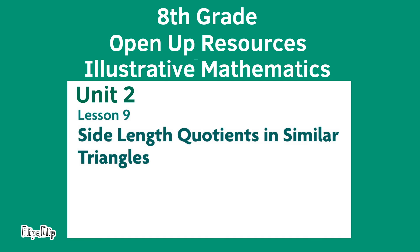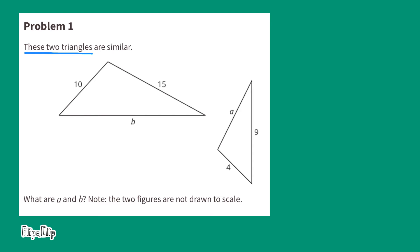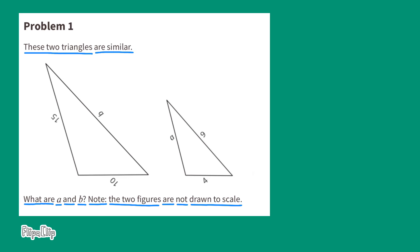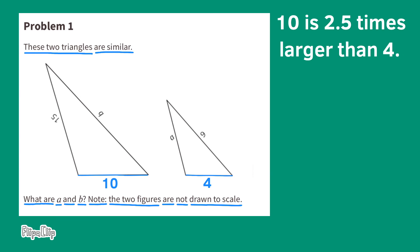Here's another look at the same lesson: 8th grade Open Up Resources Illustrative Mathematics, Unit 2, Lesson 9 — Side Length Quotients in Similar Triangles. Problem number 1: These two triangles are similar. What are A and B? Simply rearranging these triangles makes it a lot easier to find their corresponding sides. Side length 10 corresponds with side length 4, and 10 is 2 and a half times larger than 4. This tells us the scale factor is 2 and a half.